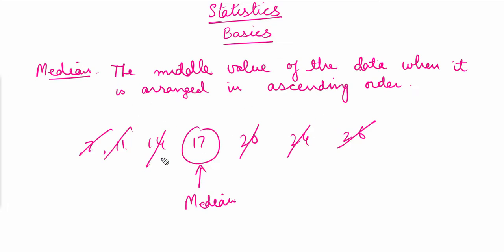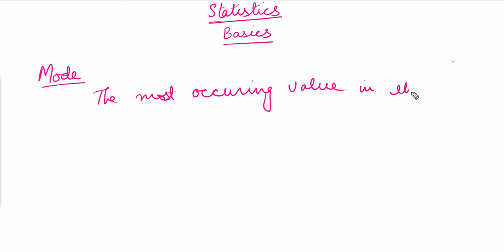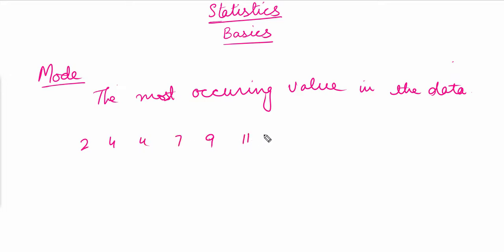The next thing to discuss is the mode. Mode is basically the most occurring value in the data. So let's suppose we have data written as 2, 4, 4, 7, 9, 11, 11, 11, 14, 17, 17.